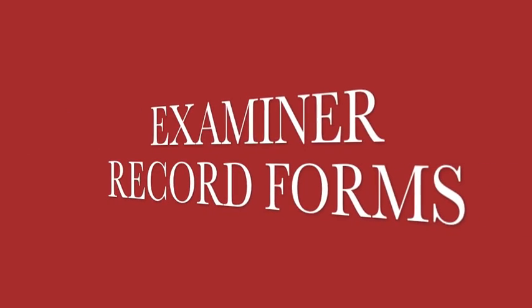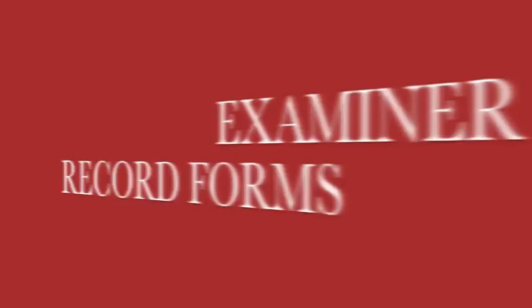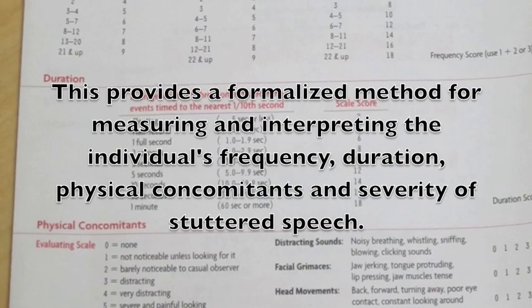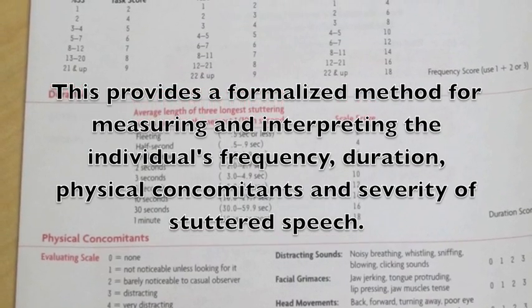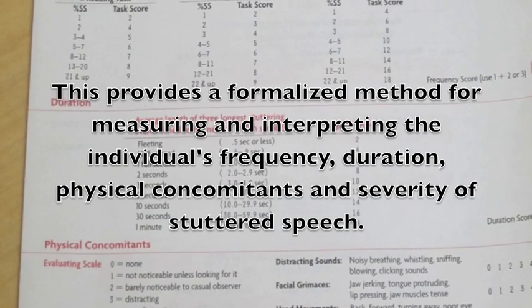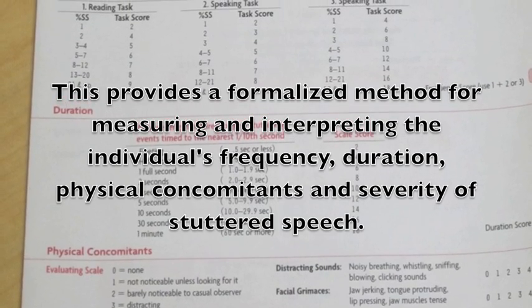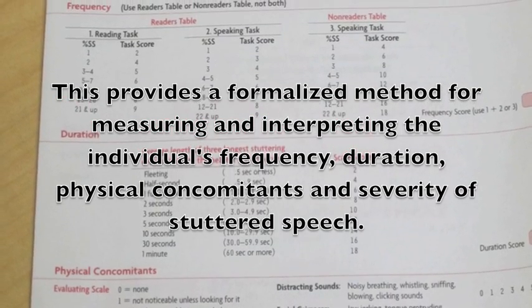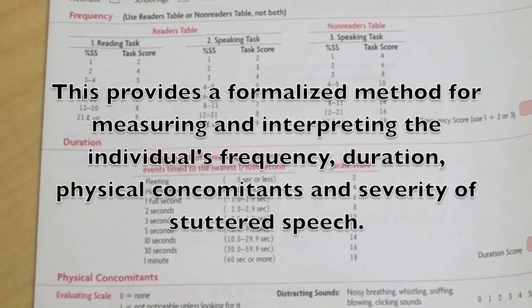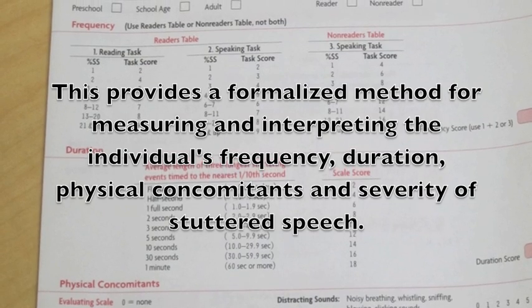Examiner Record Forms provide a formalized method for measuring and interpreting the individual's frequency, duration, and physical concomitants and severity of stuttered speech.